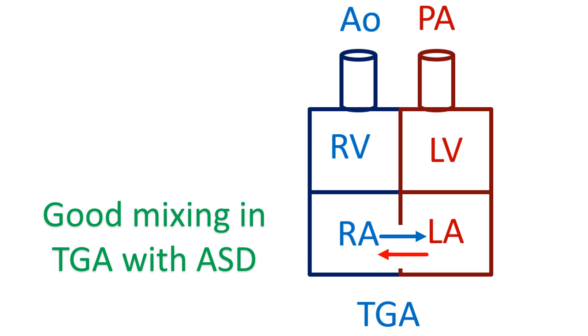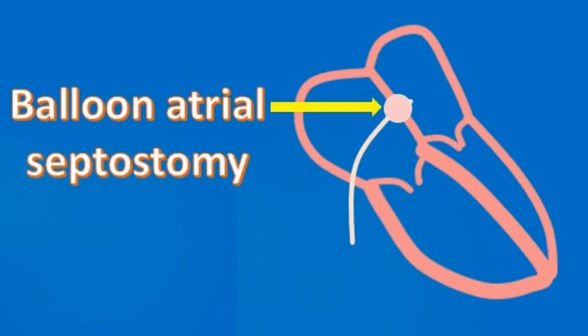Survival is impossible unless there is good mixing by a congenital defect which permits mixing of pulmonary and systemic venous returns. The best form of mixing can occur if there is an atrial septal defect. In those with poor mixing, an opening is created in the atrial septum in the neonatal period by a procedure known as balloon atrial septostomy, to improve systemic oxygen saturation and thereby survival.